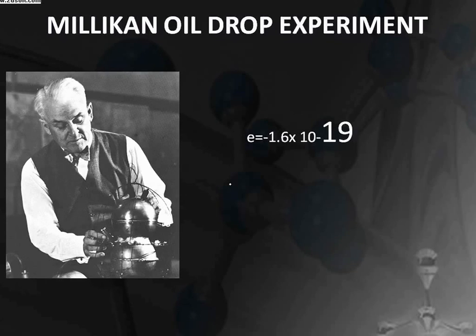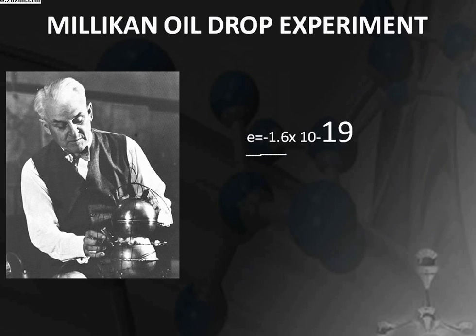Today I am going to discuss the experiment carried out by Mr. Robert A. Millikan. It was carried out between the years 1906 and 1914, and this experiment was carried out to determine the charge of the electron. He found by this experiment that the charge of the electron was negative 1.6 into 10 to the power minus 19 coulombs.